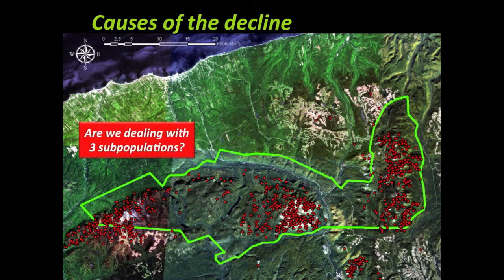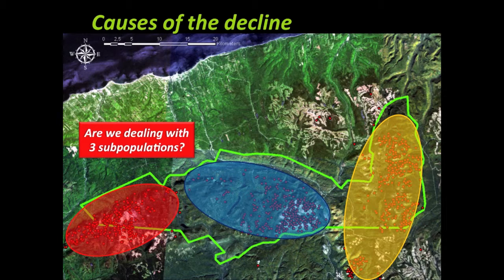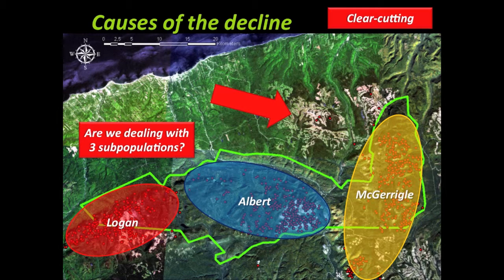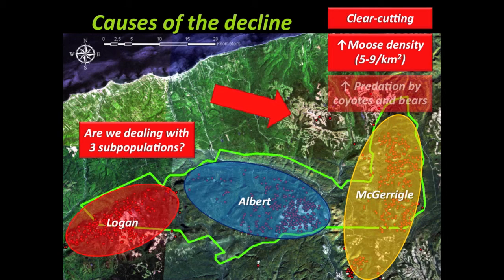One thing we can think about is whether we're dealing with three subpopulations. The VHF telemetry survey locations show grouping around three different summits: Mont Logan, Mont Albert, and Bom-ba-garigals. We have evidence that there's not much exchange of individuals between the three summits, so maybe we're not dealing with one population of 100 individuals but with three smaller subpopulations with low exchange. Outside Gaspésie National Park, there are many cut blocks, which may be driving an increase in moose density.